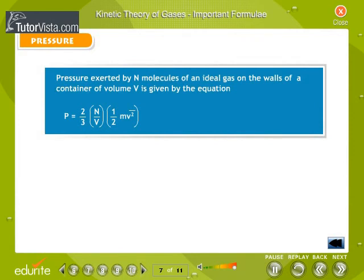Pressure: Pressure exerted by n molecules of an ideal gas on the walls of a container of volume V is given by the equation, where v is the velocity of molecules.